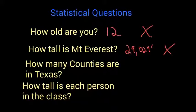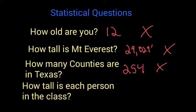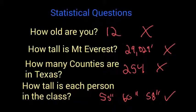How many counties are in Texas? There are 254. Again, only one answer, so that is not statistical. If I ask the question, how tall is each person in class? I could get answers like 55 inches, 60 inches, 58 inches. So I'm getting more than one number. This is statistical because there are multiple answers that are all numbers.